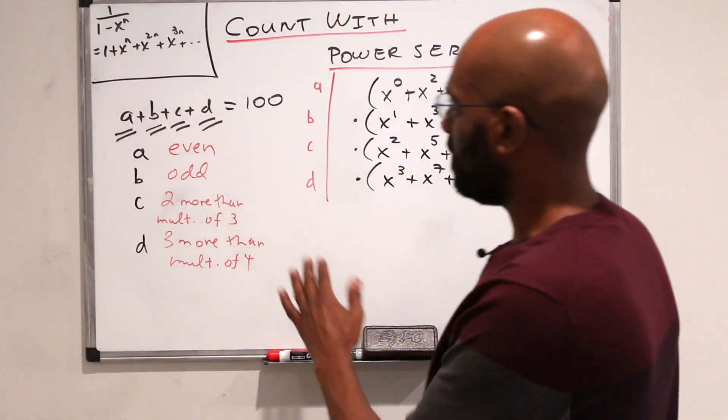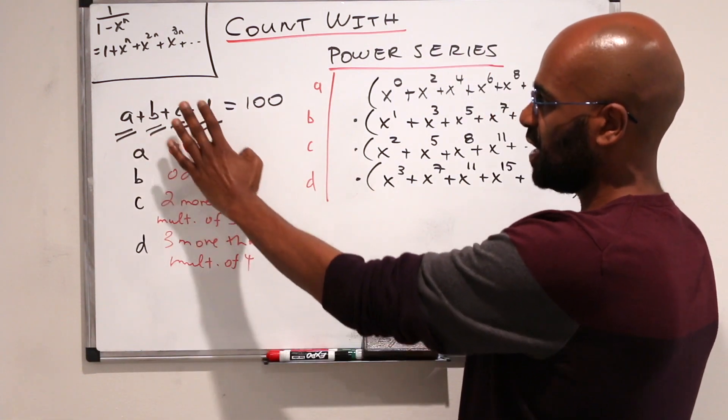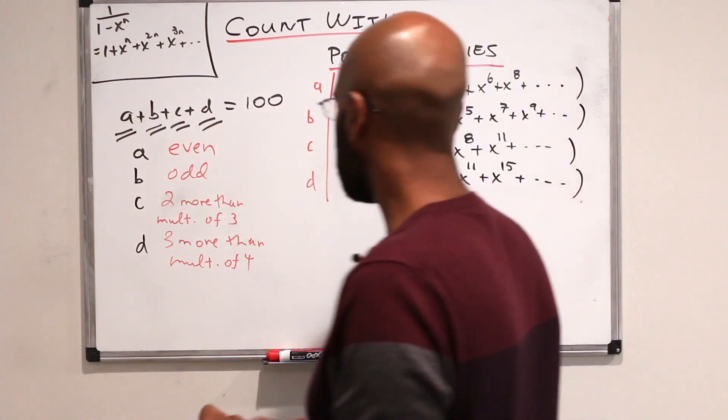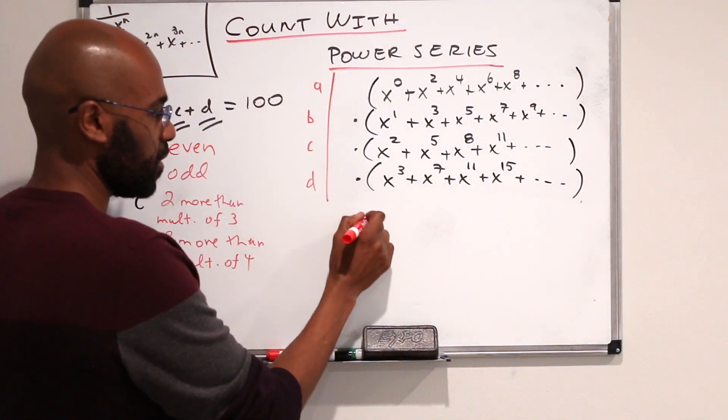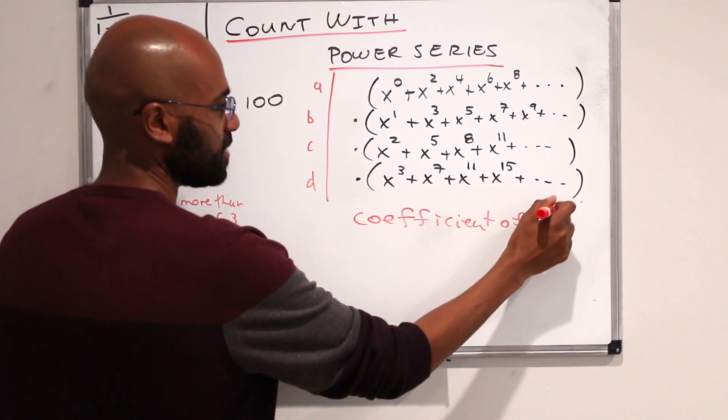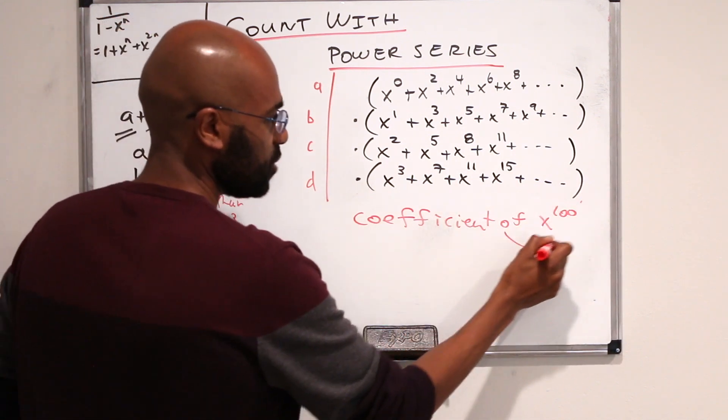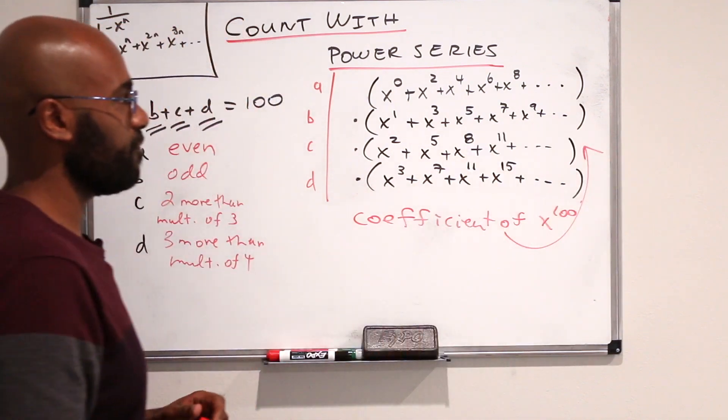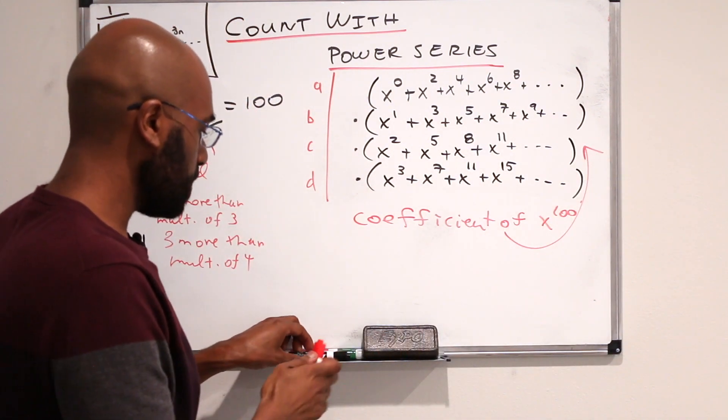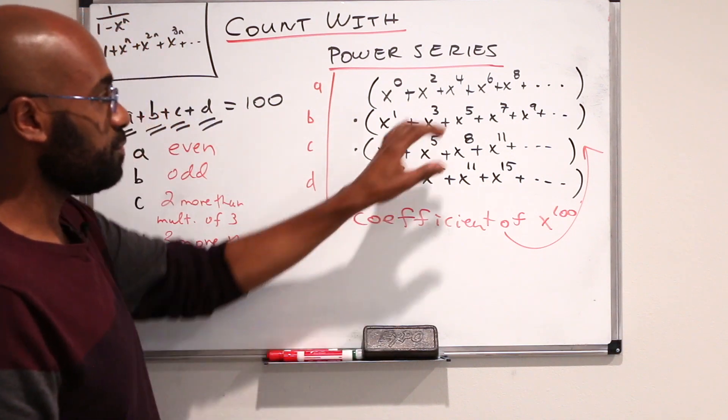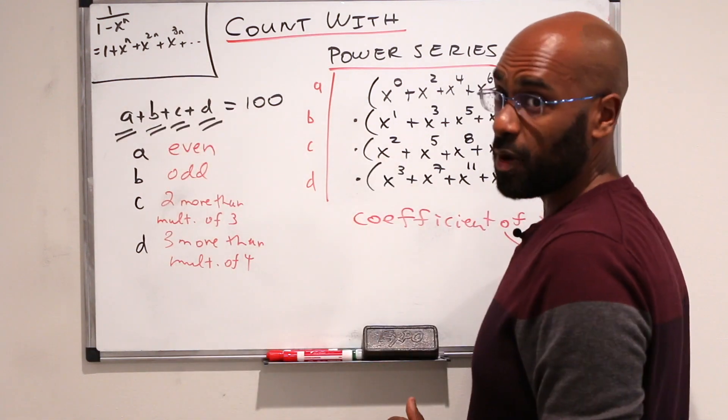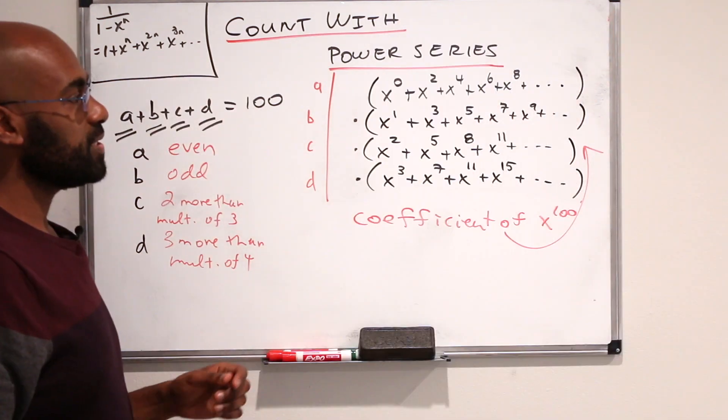So if we're looking for the number of solutions to this where the sum is 100 and we have all these conditions, then we're looking for the coefficient of x to the 100 in the expansion of this entire product. Now we can simplify our lives a little bit by simplifying the expression we have to deal with using this formula.